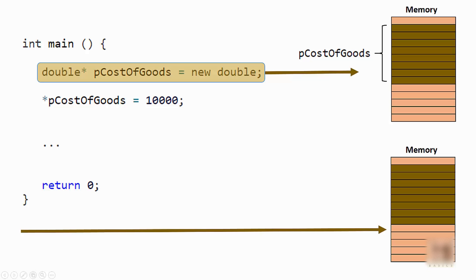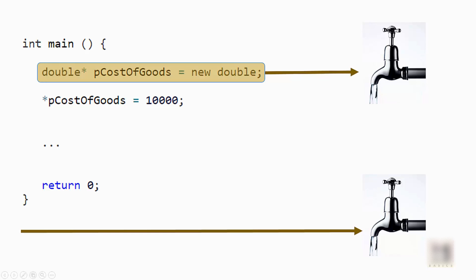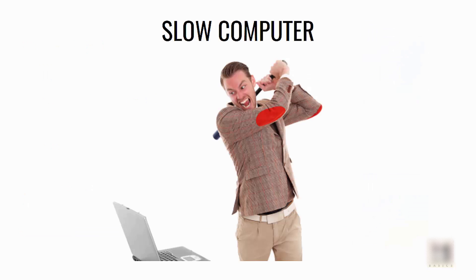If you forget to write that delete statement, what will happen is even after the program ends you will still have that memory allocated. No other program or variable can use this memory. If you have too many programs which are not cleaning up memory properly, your computer will become slow because other programs will have a hard time finding free memory. This is similar to opening a water tap but not closing it — your water is leaking and it's a waste of your resource. So if you have a lot of memory leaks, your computer will run really slow.